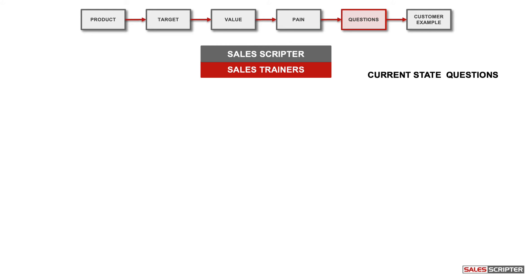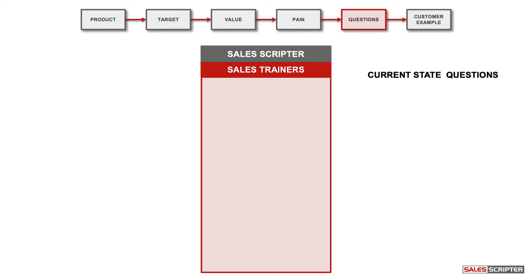There's a second category of questions I recommend you create: current state questions. These are questions that help you identify what the prospect is doing in the area where you have something to sell. For example, if you sold cars, you'd ask current state questions like: do you have a car today, what year is it, how many miles does it have, how is it running, how many family members do you have? Current state questions are going to be completely unique for each product.